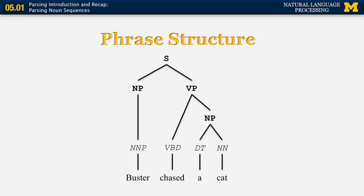In parsing, sentences can be represented using a phrase structure formalism. In the simple example 'Buster chased a cat': Buster is a proper noun (NNP), chased is a past-tense verb (VBD), 'a' is a determiner (DT), and cat is a common noun (NN). We combine these into phrases: 'a cat' is a noun phrase (NP), 'chased a cat' is a verb phrase (VP), and at the top level a noun phrase 'Buster' combines with the verb phrase to form a sentence (S).